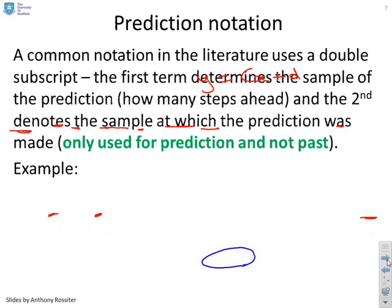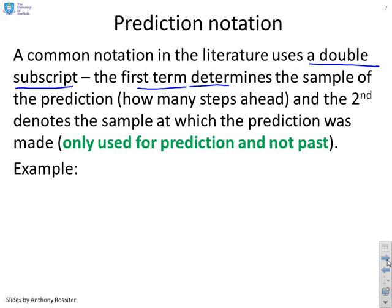Within predictive control, there's a common notation using a double subscript for prediction to try and avoid confusion. The way this subscript works is the first term determines the sample of the prediction - how many steps ahead are you predicting? The second number in the subscript denotes the sample at which the prediction was made. So you'll see this double notation only where a variable is in the future.